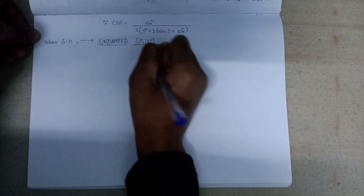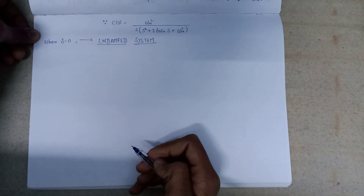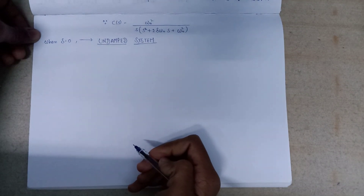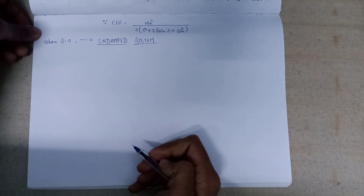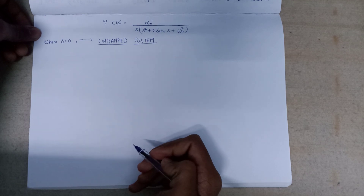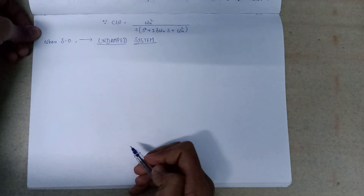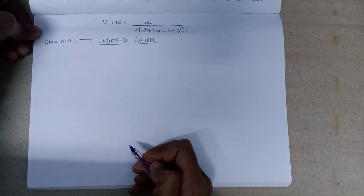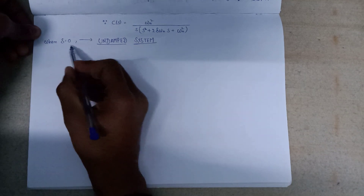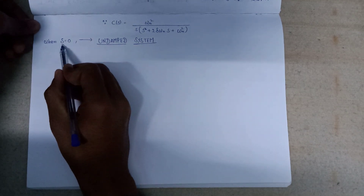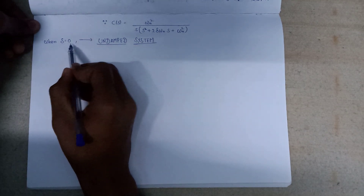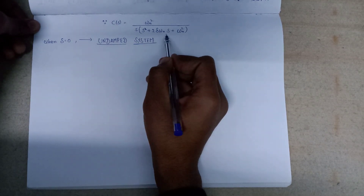So in this lecture, we are going to derive and plot the time response of the undamped system subjected to the unit step input. So let's put the value of delta equals to zero in this expression.